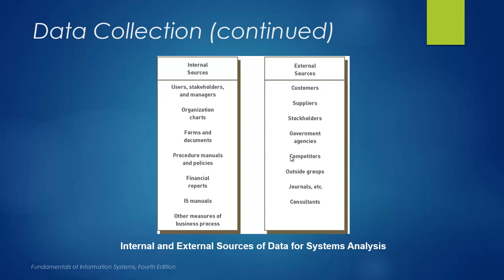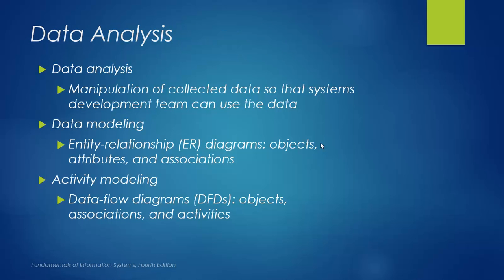The table in this slide identifies internal and external resources based on their interaction with the system. This table can be altered based on the organization and the type of business we are dealing with — it is not set in stone. We can change it based on the company we are in or dealing with. The design team can use different software packages and statistical tools to clean the data and find the trends and patterns related to each component in the system.